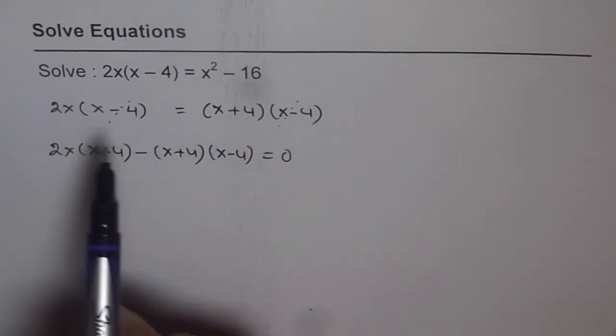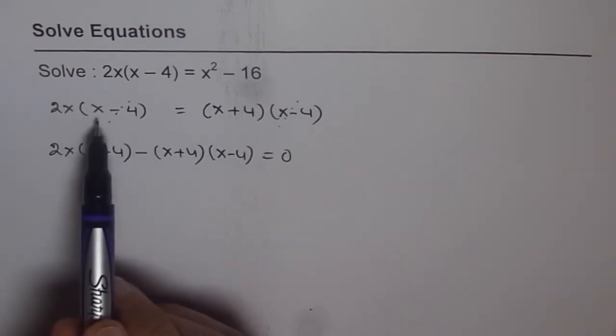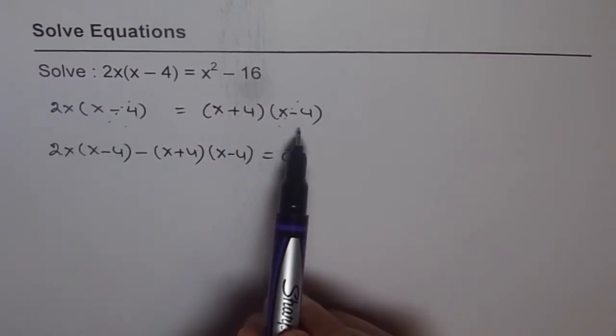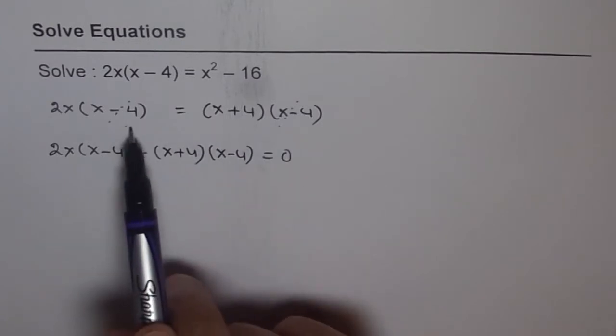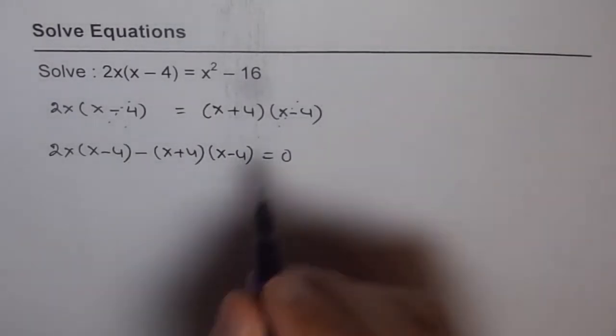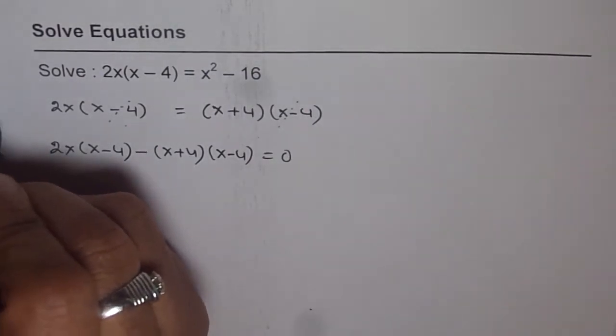As you can see from here, x equals 4 is a solution. If I put x equals 4, we get 0 on the left side and we get 0 on the right side also. A common factor in any equation leads to a solution. So this tells you that there is a solution which is x equals 4.